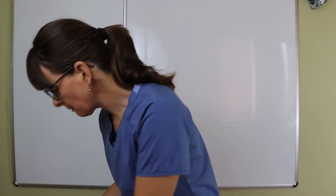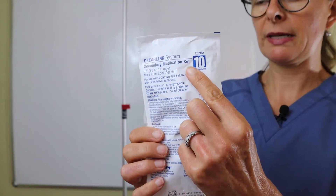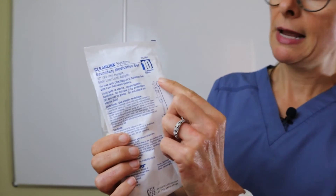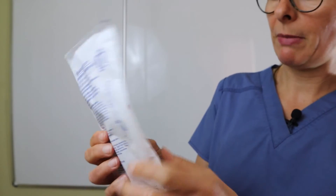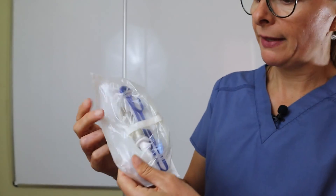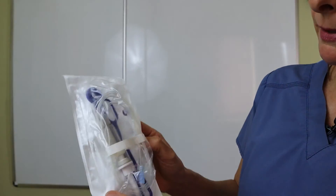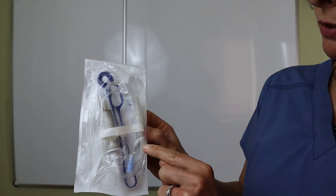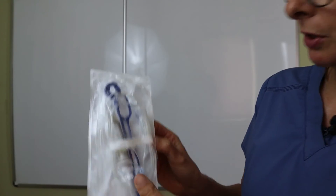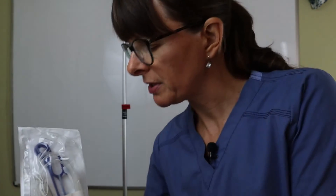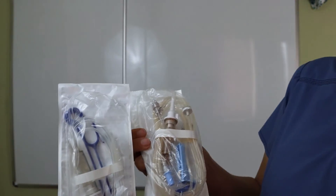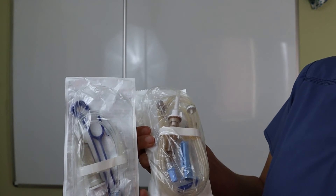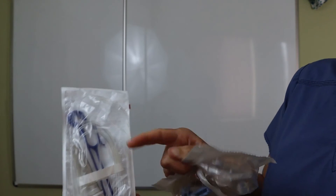The secondary medication set looks like this — it actually says 'secondary medication set' on the packaging. Again, it tells you the drops per ml. And if you look at it, it's much shorter. Taking a look at the other tubing here in comparison, you can see that there's a lot more tubing involved on the primary set.